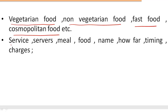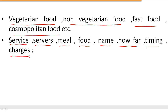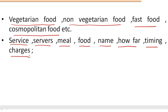Then we can talk about the service — what kind of service is there in the restaurant you are going to talk about. The service means the waiters, the people who serve food. We can talk about the meal, what kind of meal is available there. The variety of food, name of the food, name of the restaurant, how far that restaurant is, the timing of the restaurant, and the charges — the food charges. So we have got enough ideas with us.